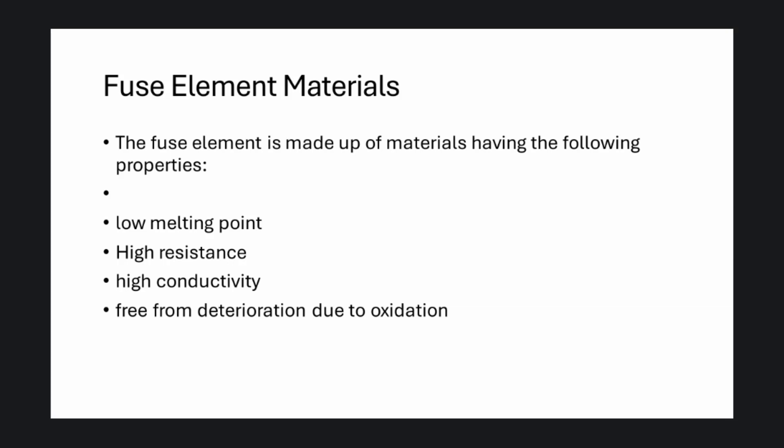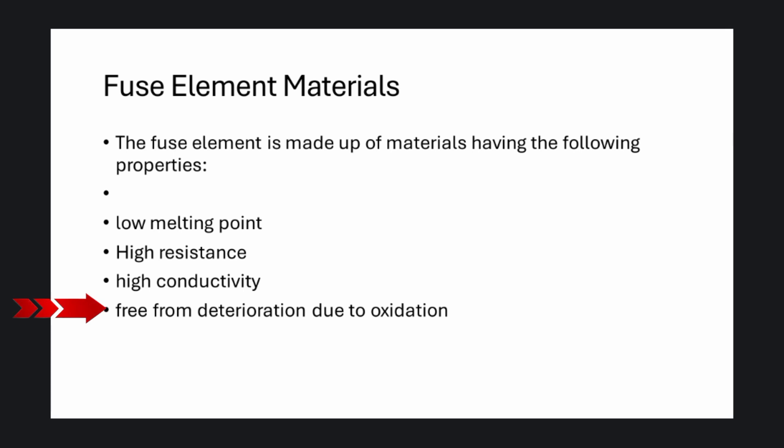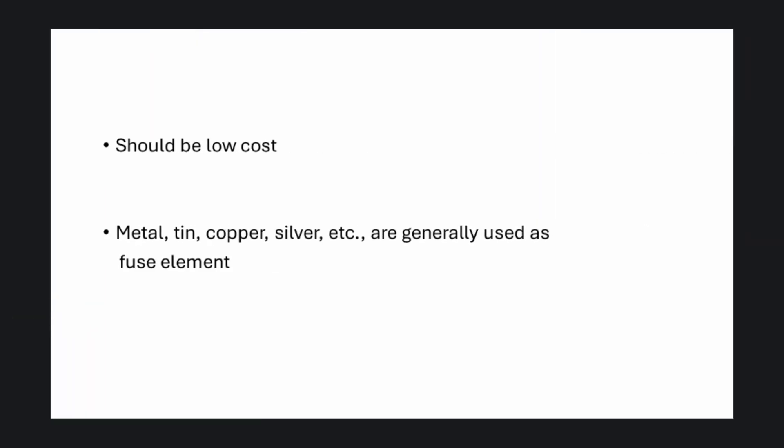Hello, welcome back to my YouTube channel. Fuse element materials: the fuse element is made up of materials having the following properties — low melting point, high resistance, high conductivity, free from deterioration due to oxidation, and should be low cost metal.